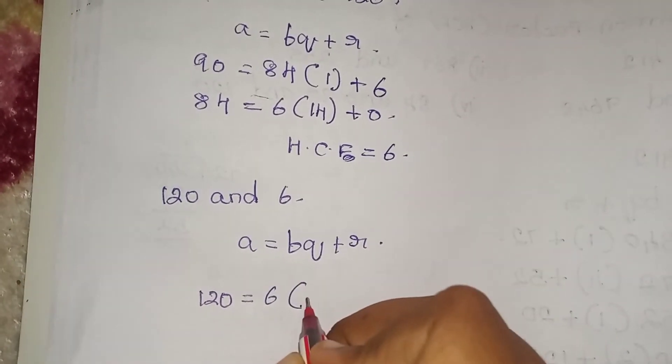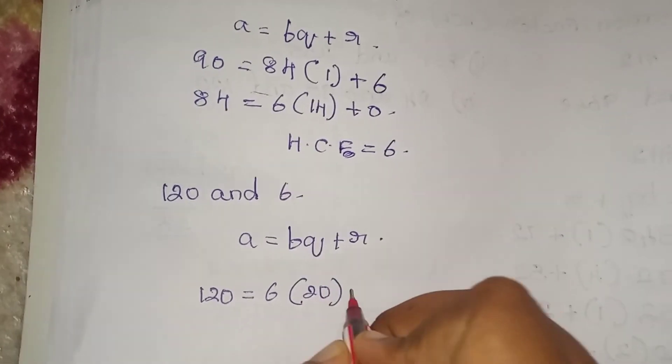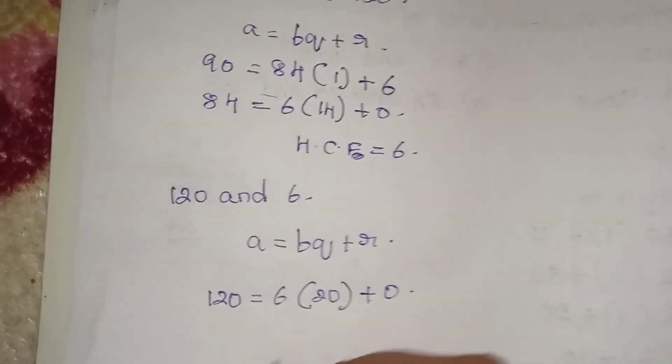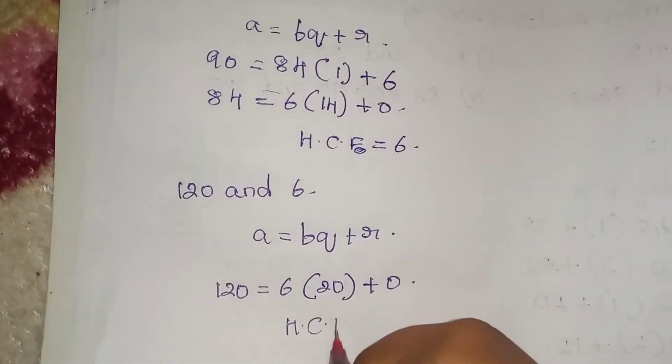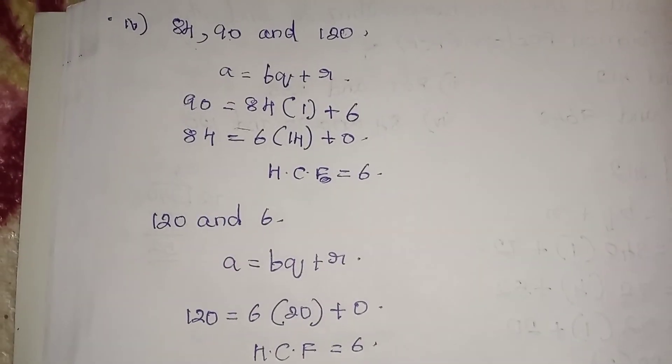Divisor is 6, quotient is 20 times, remainder is 0. The HCF is equal to 6. As I said, the sum is equal to 6.